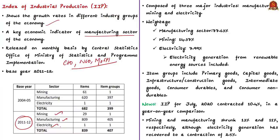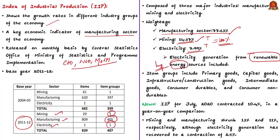Manufacturing has 405 item groups, while mining and electricity have one item group each. The maximum weight is assigned to manufacturing at 77.63%, second place goes to mining at 14.37%, and the least weight is attached to electricity at 7.99%. Electricity generation from renewable sources has also been included under the electricity sector. IIP for July 2020 contracted by 10.4% year-on-year — mining and manufacturing shrunk by 13% and 11% respectively, and electricity generation recovered to a contraction of 2.5%, all due to COVID-19 and restrictions in containment zones.